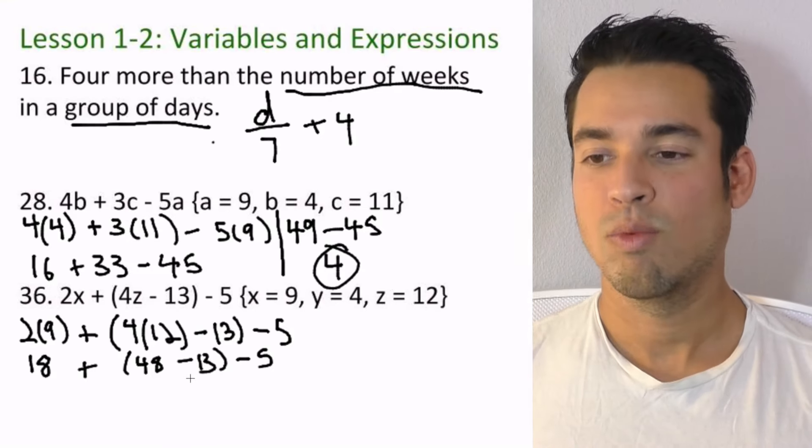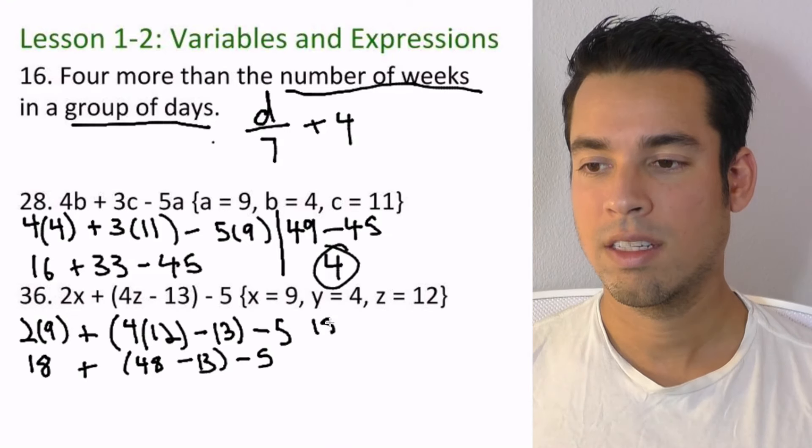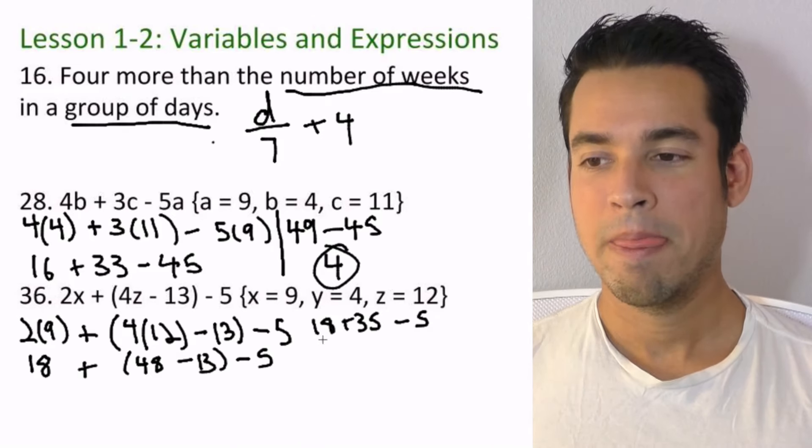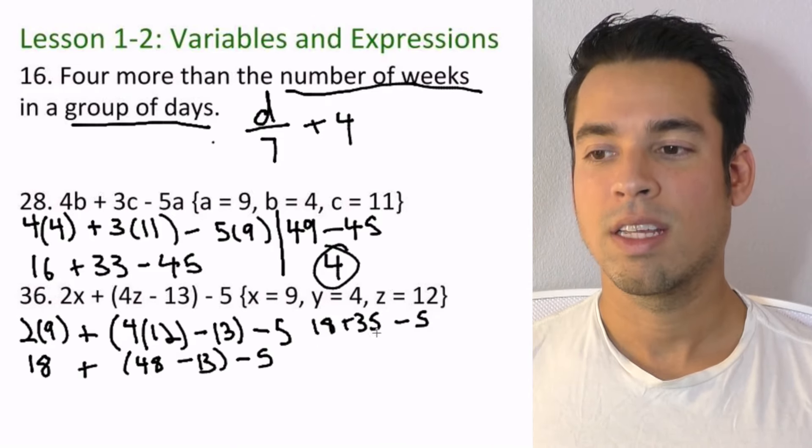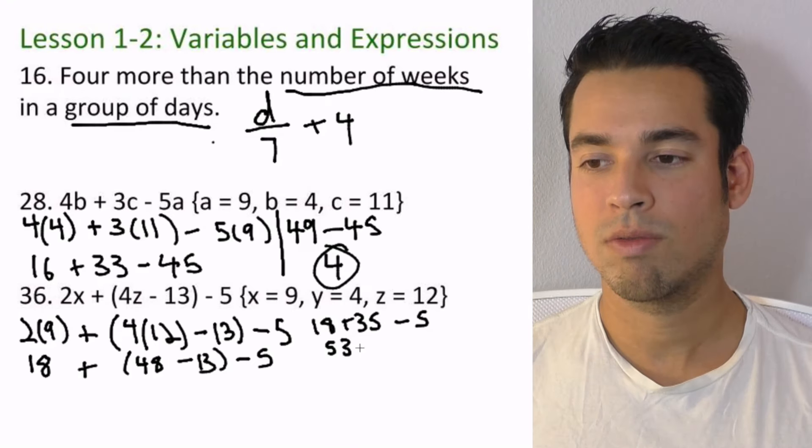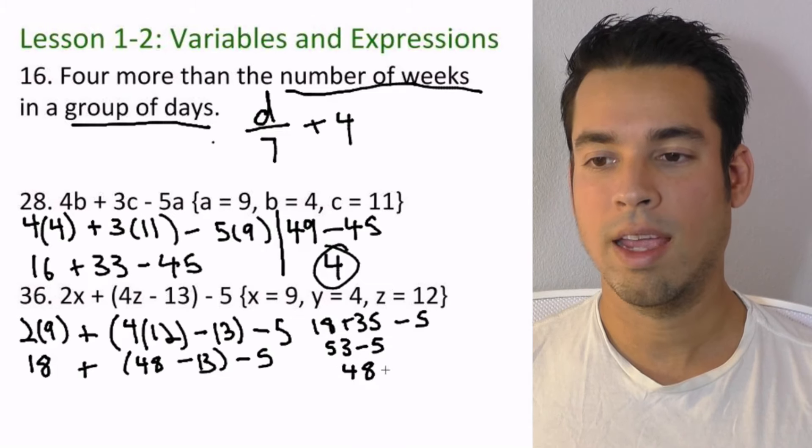So we'll say 18 plus 35 minus 5. So again, left to right, 18 plus 35, that's 53. 53 minus 5, I'll write it out, 53 minus 5 gives you 48.